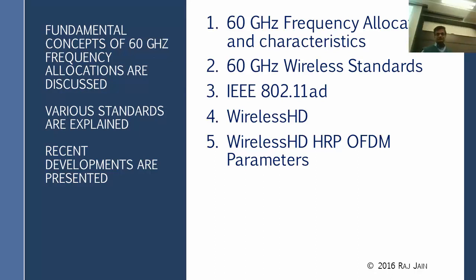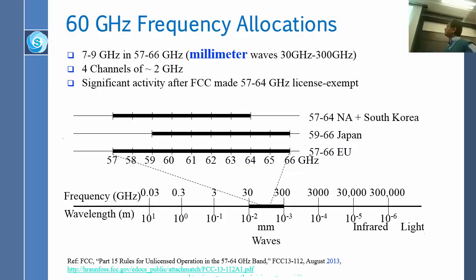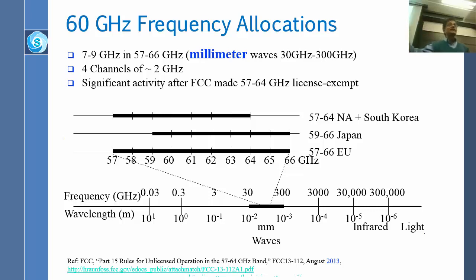So for 60 gigahertz frequency allocation: in North America, the FCC gave 57 to 64 GHz. Korea gave the same. In Japan, they gave 59 to 66 GHz. In the EU, they gave 57 to 66 GHz. Why do different countries give different allocations? Because these are all new allocations — they may have previously assigned these bands for military or civilian uses which cannot be cleared quickly. So there are some important existing uses in different countries.